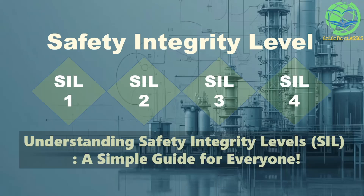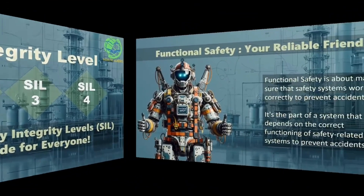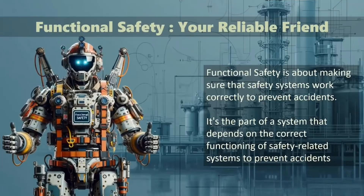Before moving to the main topic, we will learn a few other related terms. First, let's talk about functional safety. It's like having a reliable friend who always has your back, ensuring everything runs smoothly and safely. In technical terms, it's the part of a system that depends on the correct functioning of safety-related systems to prevent accidents.